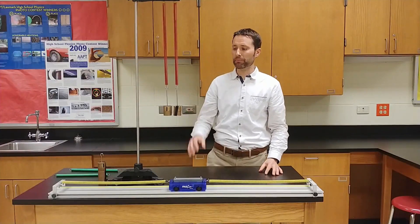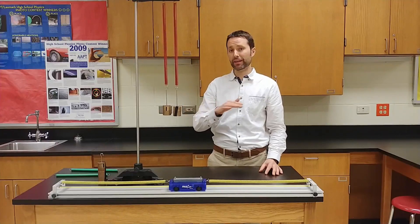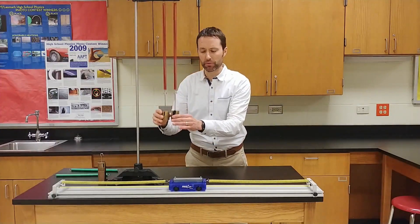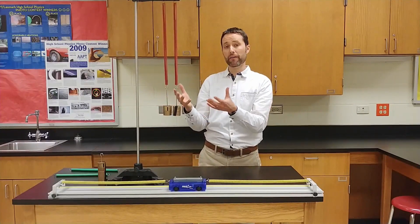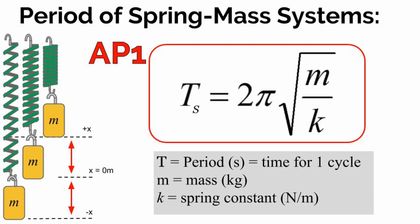So there are only two things that affect the period of a spring-mass system: the spring constant and the mass. Initial displacement doesn't matter. The equation to calculate the period is 2π times the square root of mass divided by the spring constant — 2π√(m/k). It looks a lot like the pendulum equation, and the period for a spring-mass system is also on your AP Physics 1 equation sheet.